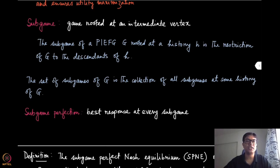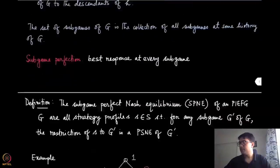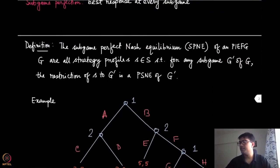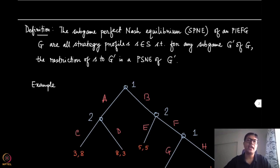As we have already hinted, our equilibrium concept should look at every subgame and try to find an equilibrium appropriate for that subgame — that is the notion of subgame perfection. Subgame perfection is essentially about the best response of the player at each subgame, and this should hold for every subgame. The subgame perfect Nash equilibrium of a PIEFG consists of all strategy profiles S such that for any subgame G' of G, the restriction of S to G' is a PSNE of G'.